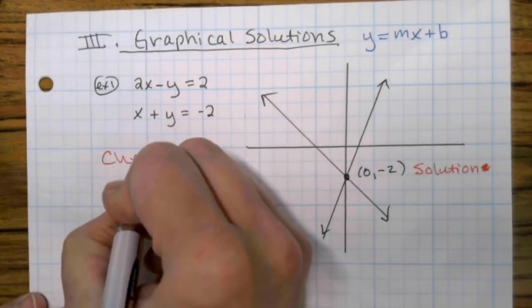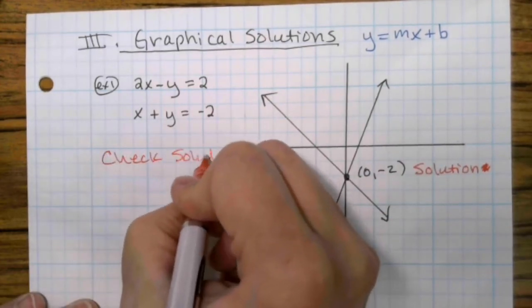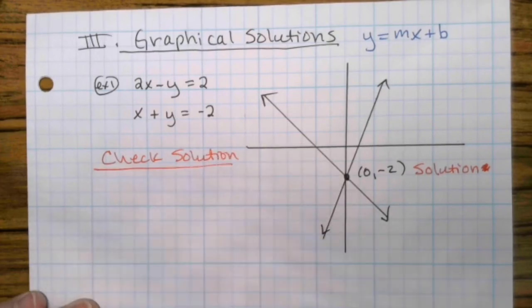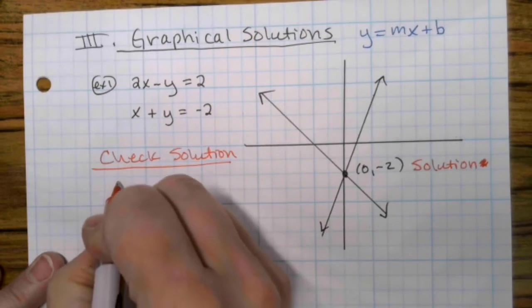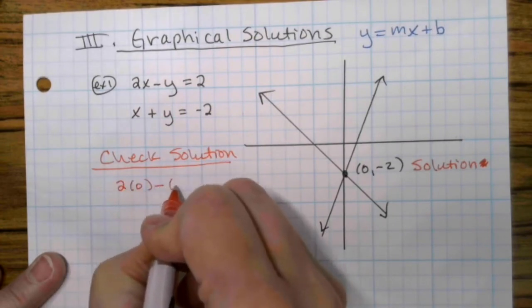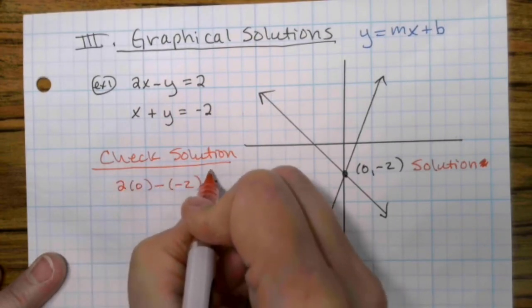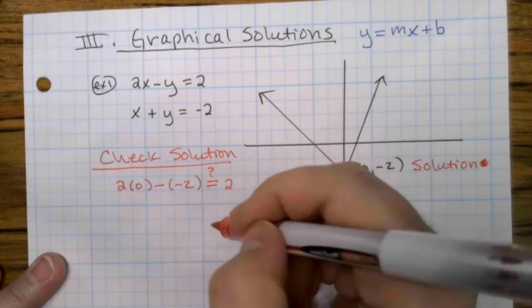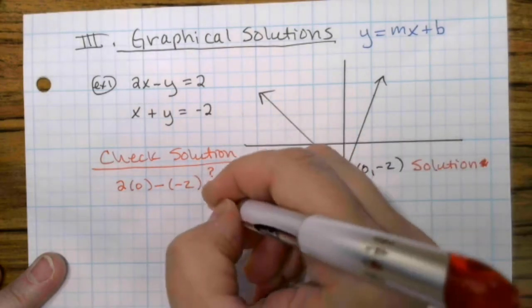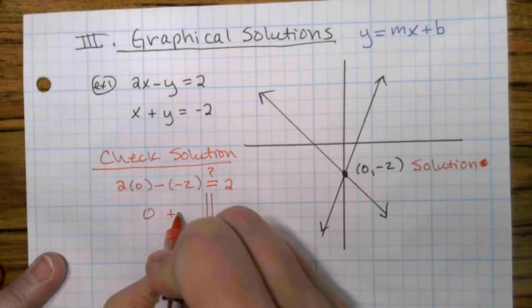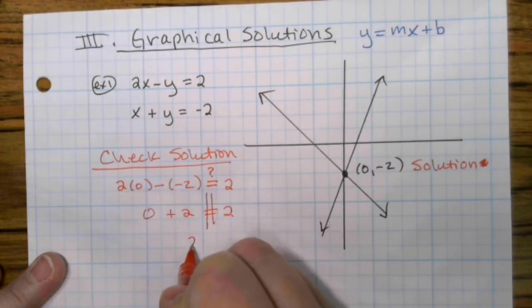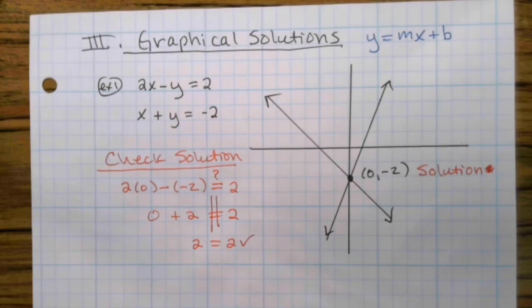Now, if we have to check our solution, all we do is substitute in. So I'm going to check it in the first equation. 2 times 0 minus a negative 2. Does that equal positive 2? And when you check, remember, double lines do not cross. Just simplify. So I have 0 plus 2. So yeah, this works in the first equation. We're good.